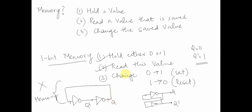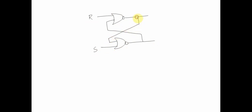Since we are not able to change the stored value — because there are no external inputs — this does not fully satisfy the properties of memory. So what we need is a set of external inputs. We can replace the NOT gates with NOR gates. Let's put two NOR gates, each with two inputs, calling one input the Reset input and the other the Set input, and create the feedback loop.